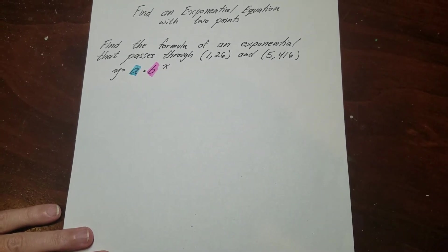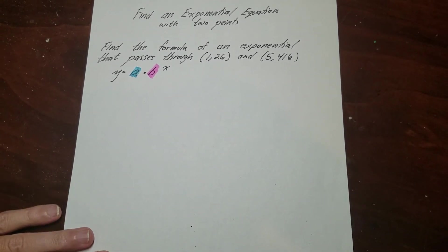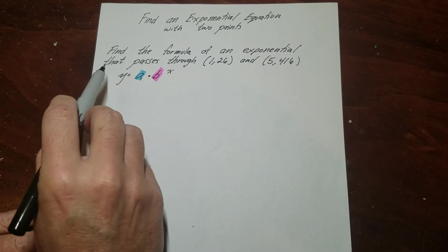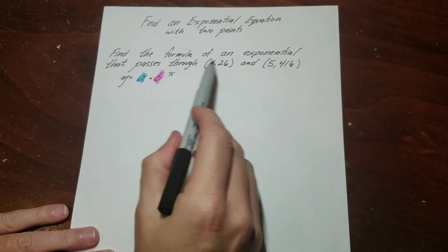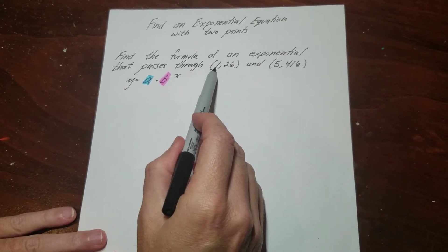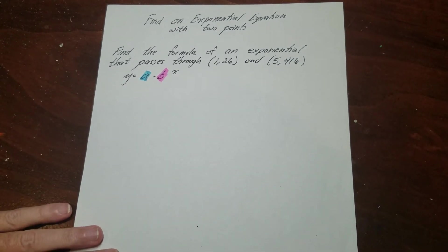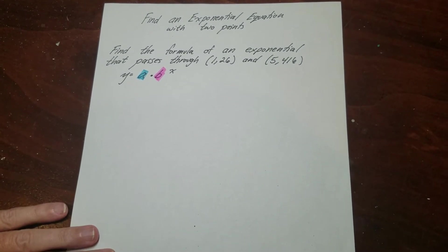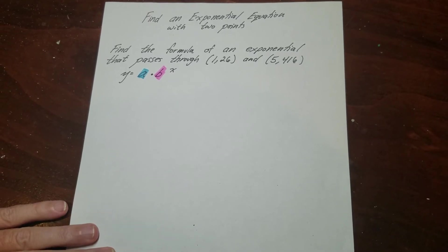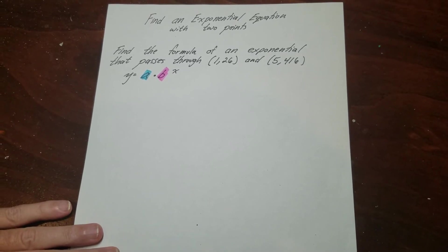All right, so we're going to find an exponential equation with two points. In order to do that, our question here is we're looking for an exponential that goes through (1,26) and (5,416). So this is a situation where we don't have a table, we don't know what the multiplier is, we don't know what the zero step is, so we have to do this.